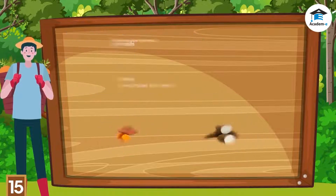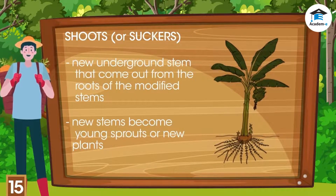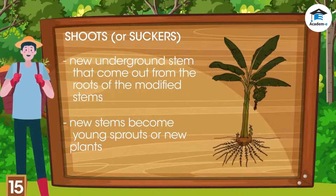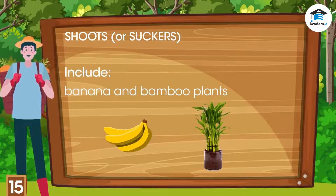Shoots or suckers are new underground stems that come out from the roots or modified stems. These new stems become young sprouts or new plants. Banana and bamboo plants grow from shoots.